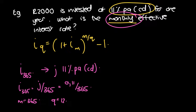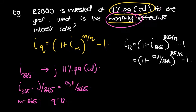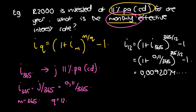So we have i12 equals 1 plus i365, raised to the power of 365 divided by 12, minus 1. Substituting in: 1 plus 0.11 divided by 365, all to the power of 365 over 12, minus 1. We can solve this on our calculator, and that gives us 0.0092074 et cetera. When we express this as a percentage, we multiply by 100.